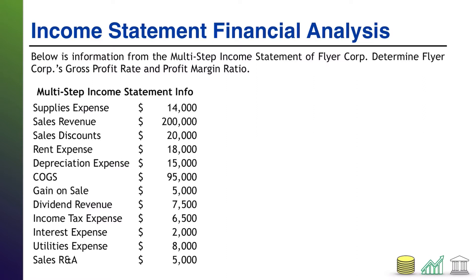Take a moment and see if you can figure this out yourself. Whenever you're ready, come on back and I'll walk through the solution. In order to solve gross profit rate and profit margin ratio, the first thing we need to do is know what exactly are those things — mathematically, what do they represent? The gross profit rate, or GPR, is simply your gross profit divided by your net sales.